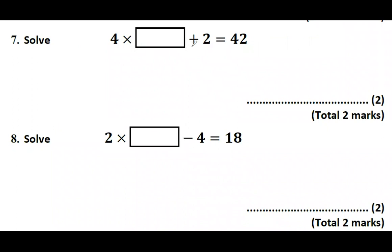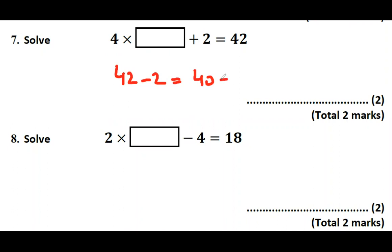Question 7: 4 times by a number, add 2 gives 42. This is basically an equation but we can still use function machine knowledge. The last operation was add 2, so we do 42 subtract 2 which gives 40. Then the inverse of times by 4 is divided by 4. So the answer is 10.